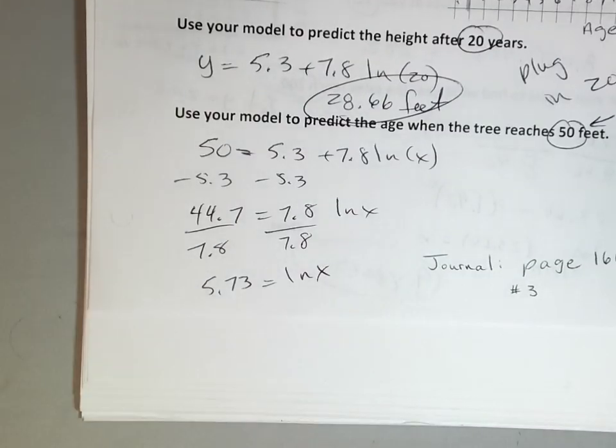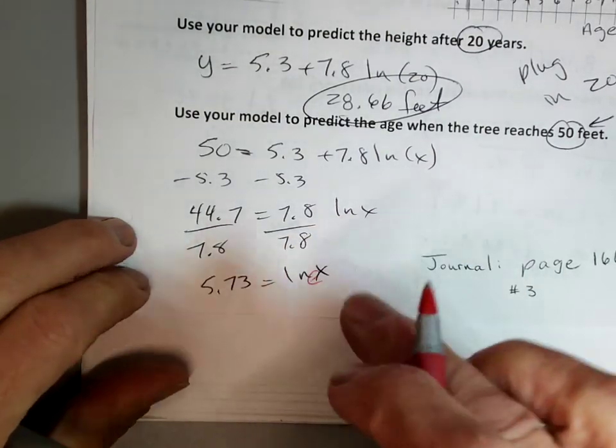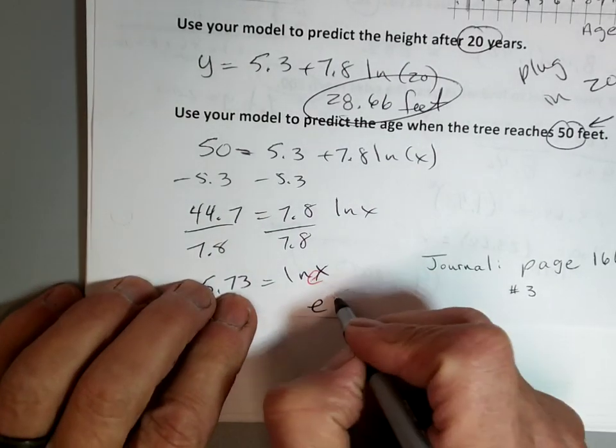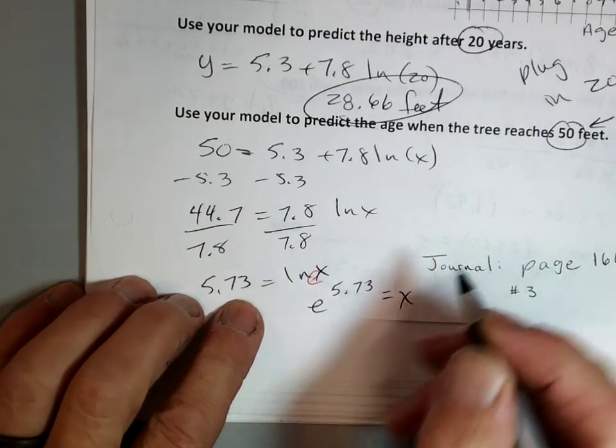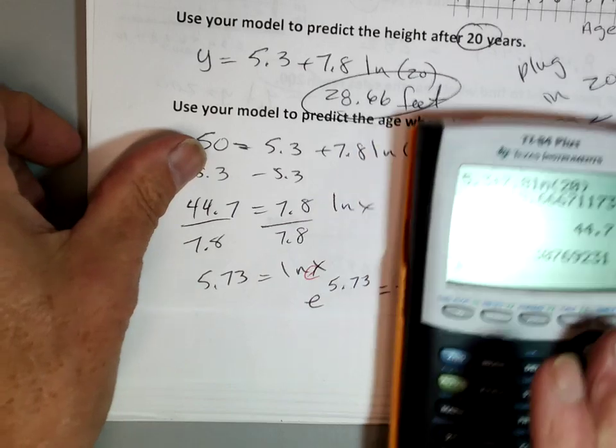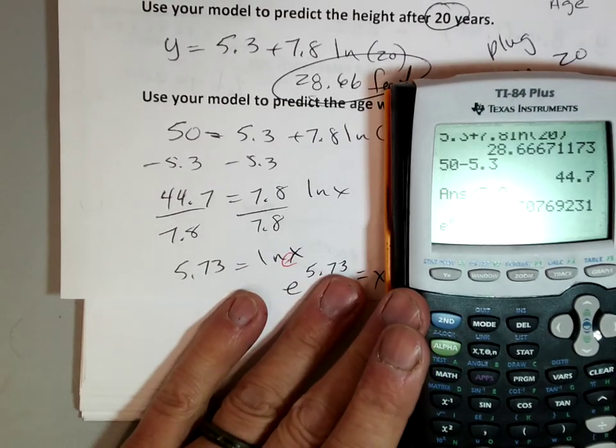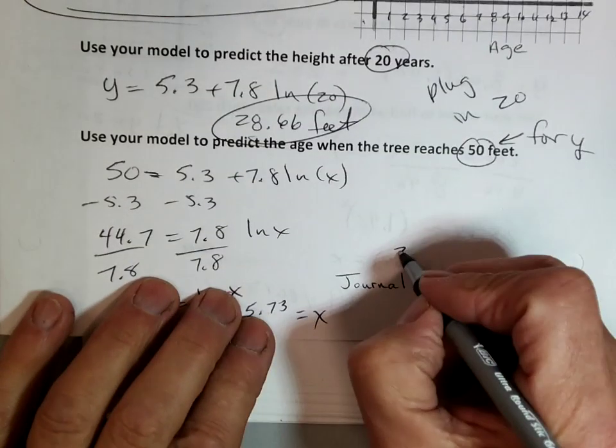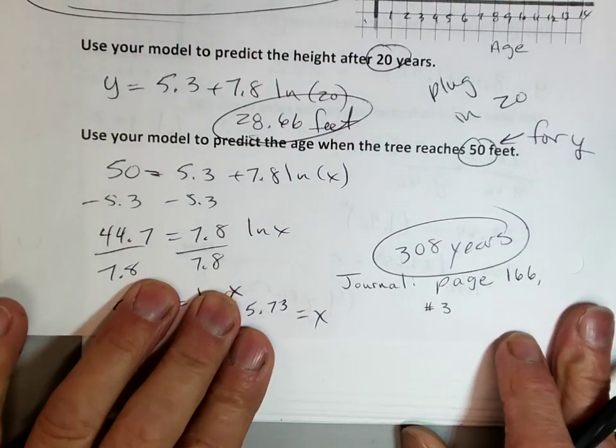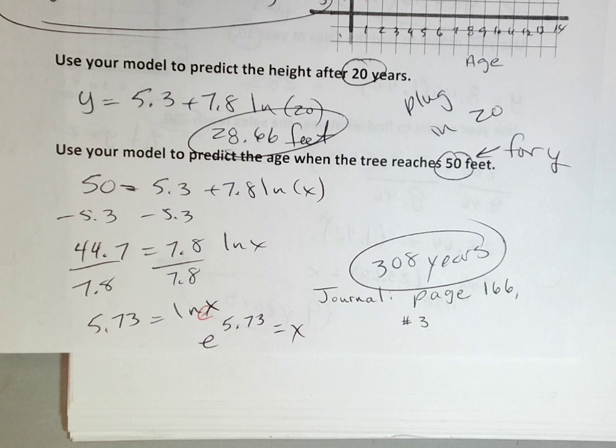Here's the big trick. We're going to get rid of the ln. To get rid of the ln, we're going to change it to an exponential. What's the base? What's the invisible base? E. So the invisible base is e. I'm going to rewrite it as e to the 5.73 is equal to x. I changed it from log form to exponential form, and I'm just going to use my calculator. I'm going to go e to the power of my 5.73, and I get an answer about 308 years. It takes a long time for trees to get that big, doesn't it? We've got a few of them in town that big and that old.